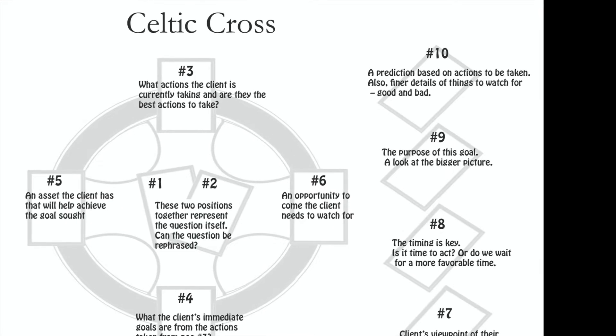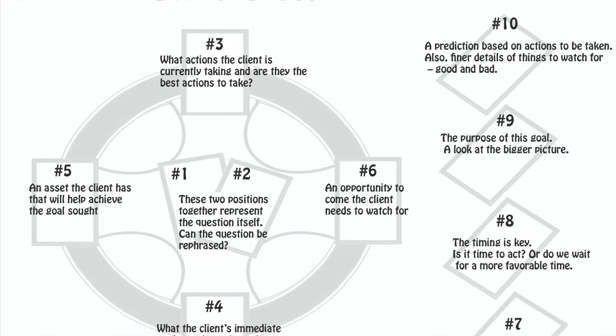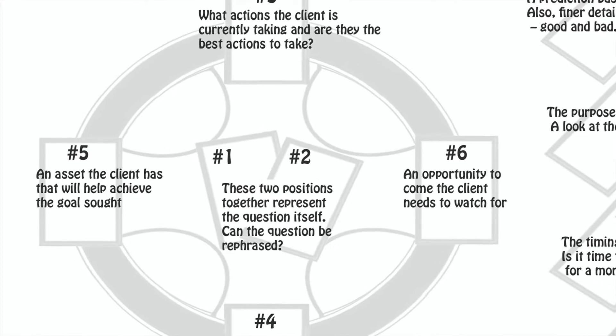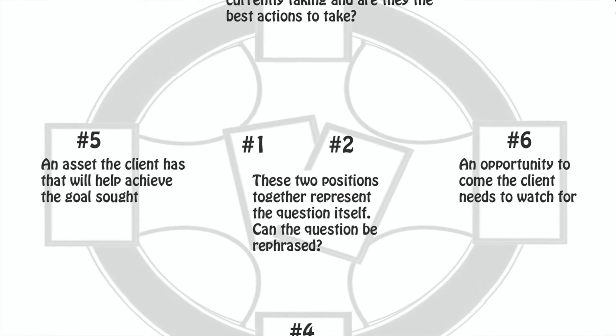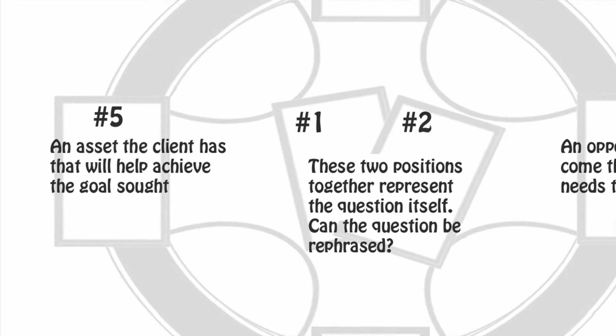Position five is an asset the client has that they should use — it would be helpful for them to achieve their goal. This allows the reader to find something about the client that maybe they're not really aware of or not using, but that would be beneficial if they did. This might be a position they're in right now, an influence they have, or a talent they have — maybe they're not using it and they should.